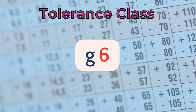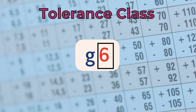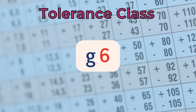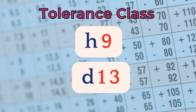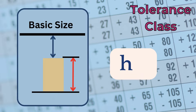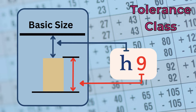The tolerance class is the term used to combine a fundamental deviation with a standard tolerance grade. For example, H9 or D13. The deviation, denoted with the letter, defines the nominal distance from the basic size, and the number defines the accuracy.